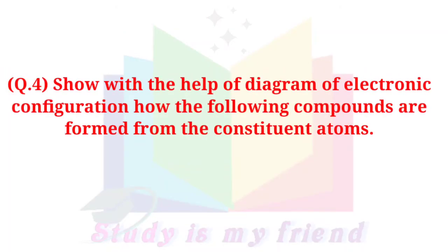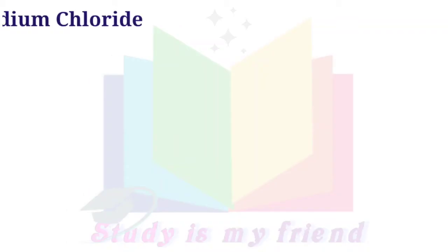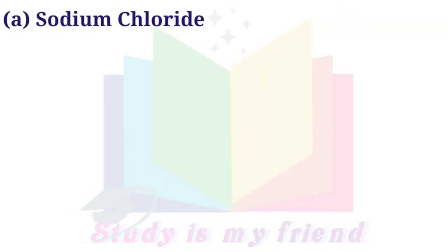Question 4: Show with the help of a diagram of electronic configuration how the following compounds are formed from the constituent atoms. A. Sodium chloride.